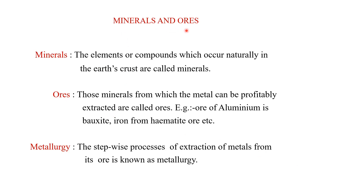Now let us see what are called minerals and what are called ores. Elements or compounds which occur naturally in the earth's crust are called minerals. Any compound found in the earth's crust can be considered a mineral. Those minerals from which a metal can be profitably extracted are called ores — for example, the ore of aluminium is bauxite and the ore of iron is hematite. There are various compounds of elements, but only those from which a metal can be easily and profitably extracted are known as ores.